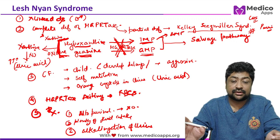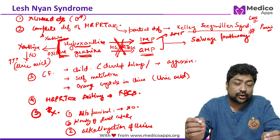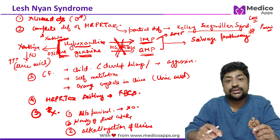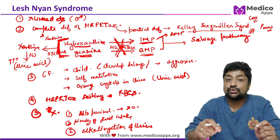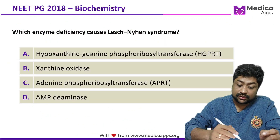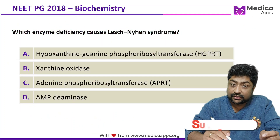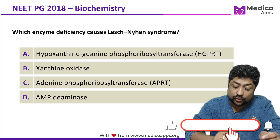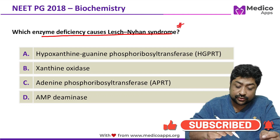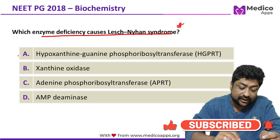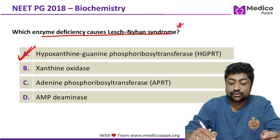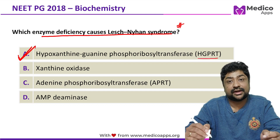These are all the high-yield points on Lesch-Nyhan syndrome — almost every line has been examined. To conclude: the correct answer to which enzyme deficiency causes Lesch-Nyhan syndrome is hypoxanthine-guanine-phosphoribosyl transferase, also called HGPRT.